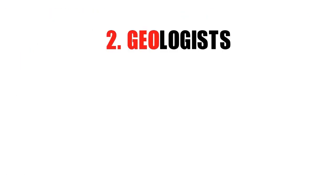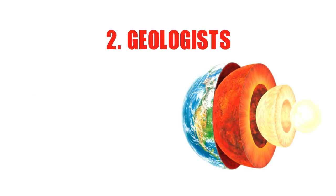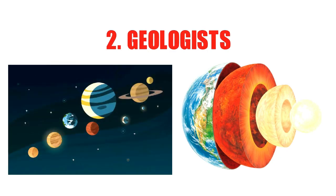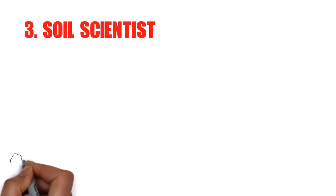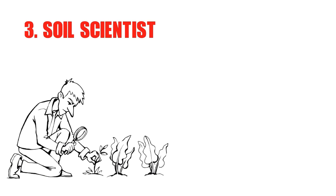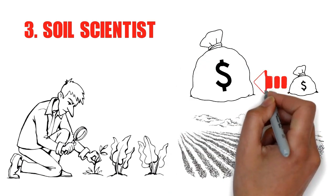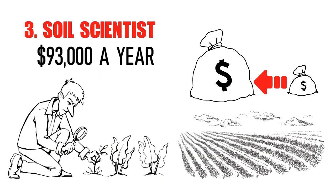The second career path is to become a geologist. Geologists focus on the broader perspective of Earth — like how Earth was formed, how different planets are formed, and what factors contribute to the shape of Earth. You can also become a soil scientist. Soil scientists focus on how different chemical, physical, or biological factors affect the fertility of the soil. As fertile soil helps in creating food for us, they are probably paid more than $93,000 a year.